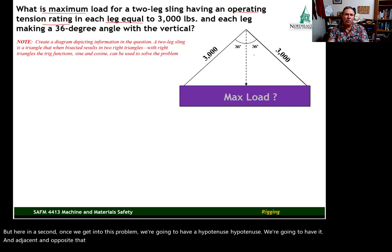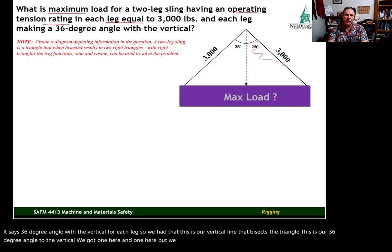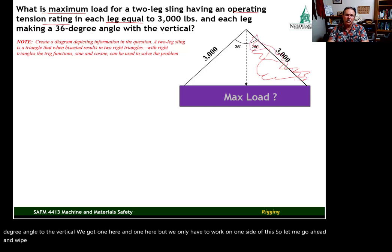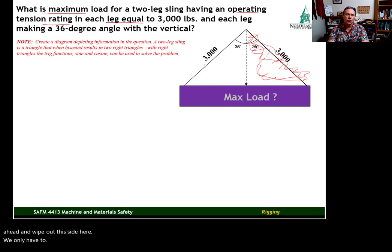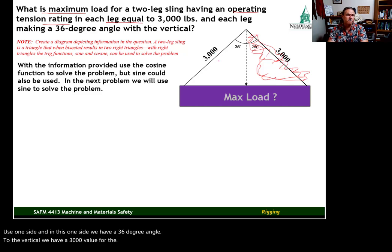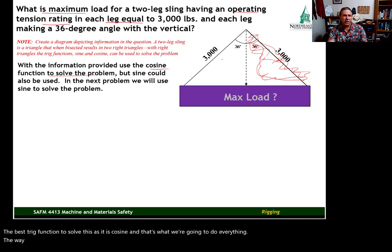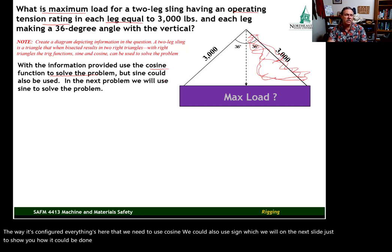We have a load, a two-leg sling, and the maximum sling tension for each leg is three thousand pounds, so we label our hypotenuse with three thousand. We'll be working with a hypotenuse, an adjacent, and an opposite. The problem states a 36-degree angle with the vertical for each leg. We draw the vertical line that bisects the triangle; that's our 36-degree angle to the vertical. We only need to work on one side, and cosine is the best trig function to solve this as configured.